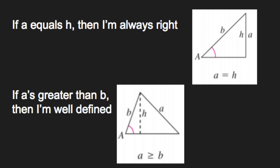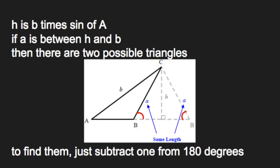then I'm always right. If A's greater than B, then I'm well-defined. H is B times sine of A.